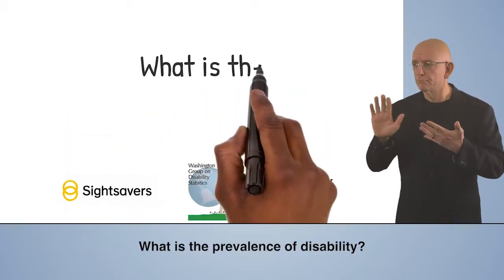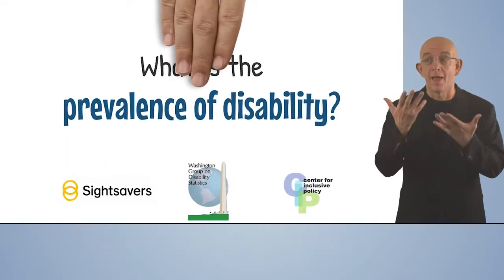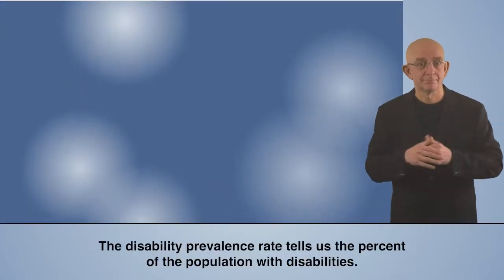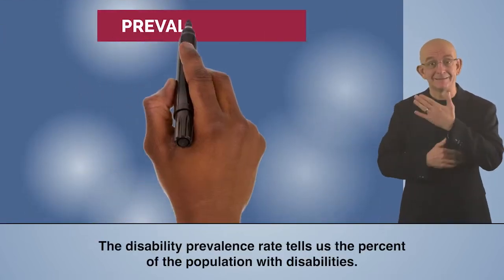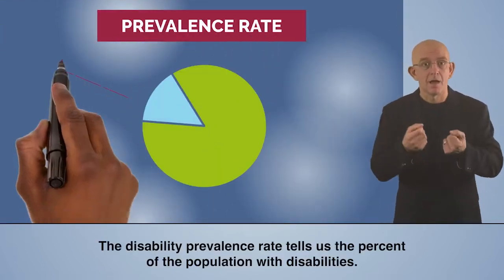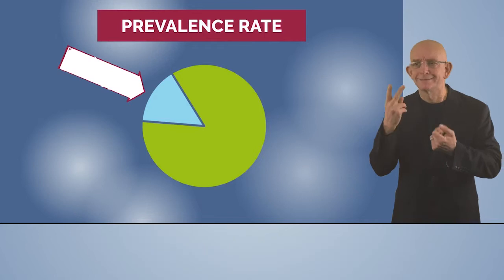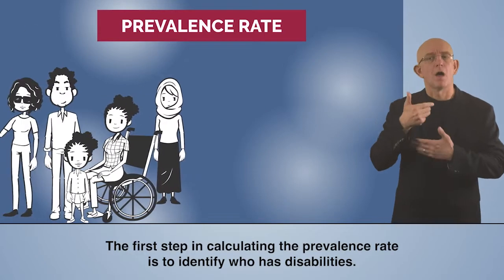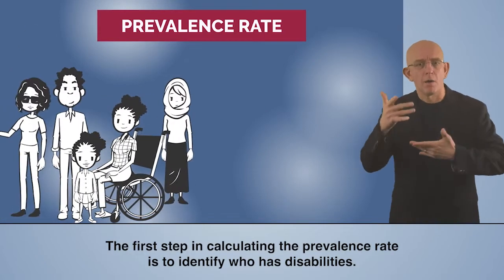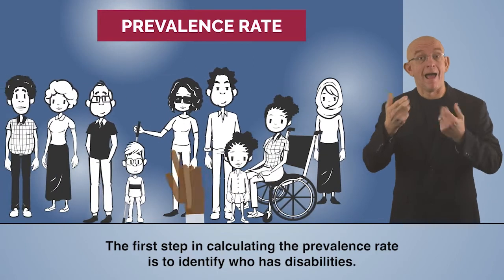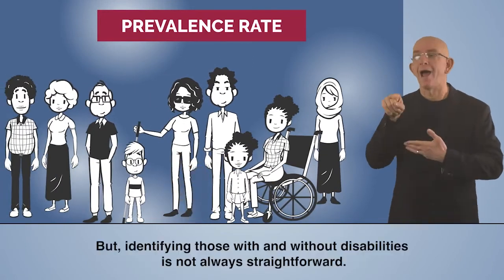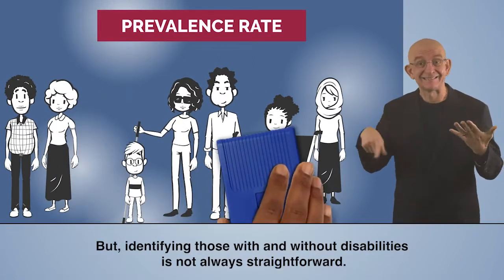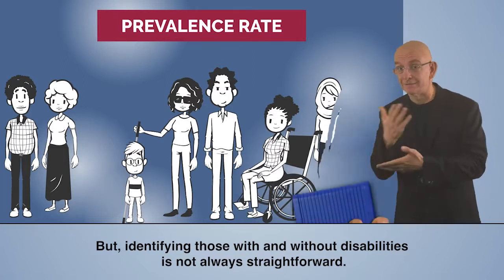What is the prevalence of disability? The disability prevalence rate tells us the percent of the population with disabilities. The first step in calculating the prevalence rate is to identify who has disabilities. But identifying those with and without disabilities is not always straightforward.